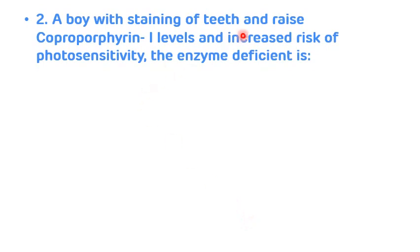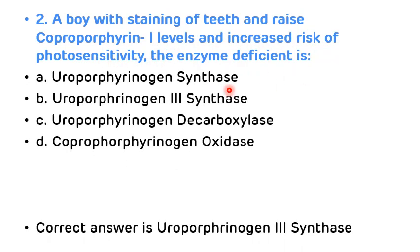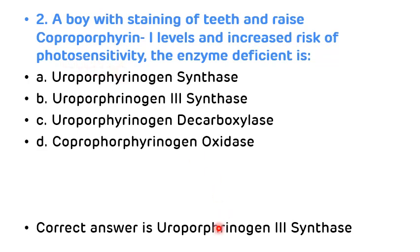Second MCQ: A boy with staining of teeth and raised coproporphyrin levels and increased risk of photosensitivity — the enzyme deficient is? Options: uroporphyrinogen synthase, uroporphyrinogen-3 synthase, uroporphyrinogen decarboxylase, coproporphyrinogen oxidase. The correct answer is uroporphyrinogen-3 synthase, as this is a case of congenital erythropoietic porphyria, characterized by erythrodontia (staining of teeth), raised porphyrin levels, and photosensitivity.